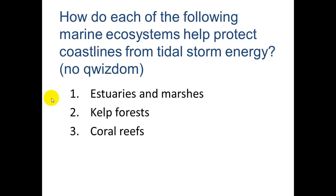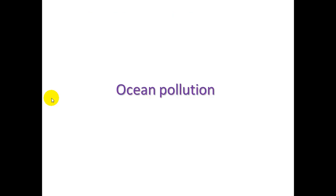For your assignment 7.3, describe how each of the following marine ecosystems — coral reefs, mangrove forests, and salt marshes — help protect coastlines from tidal storm energy. Go ahead and pause, take some notes, then we'll move on to ocean pollution.